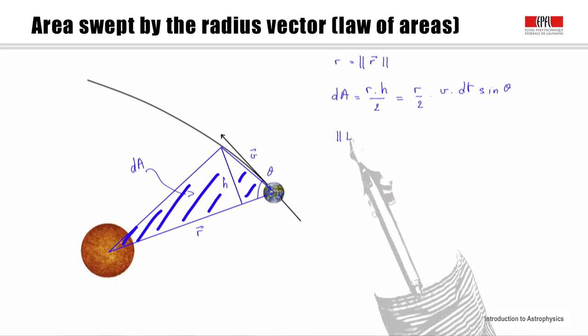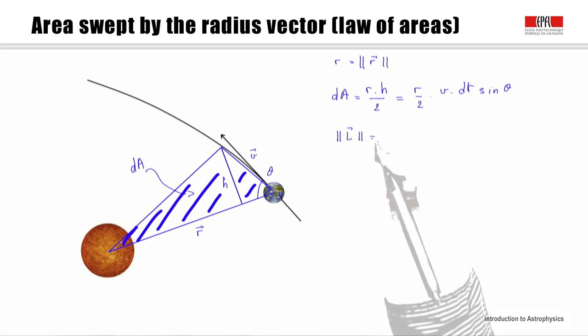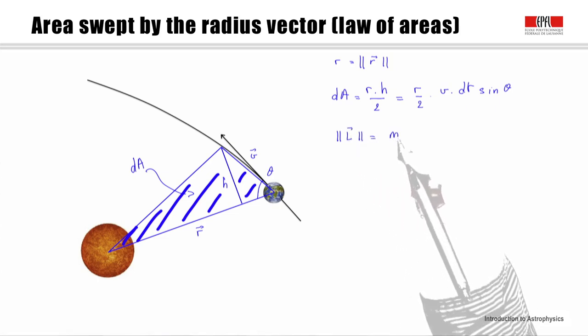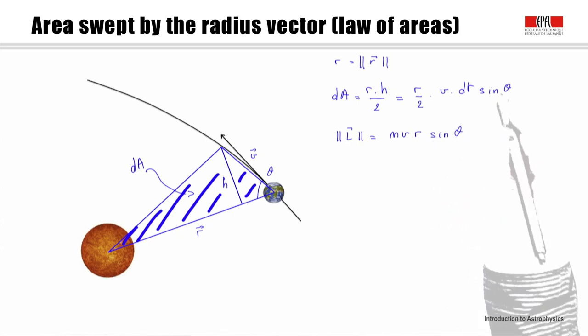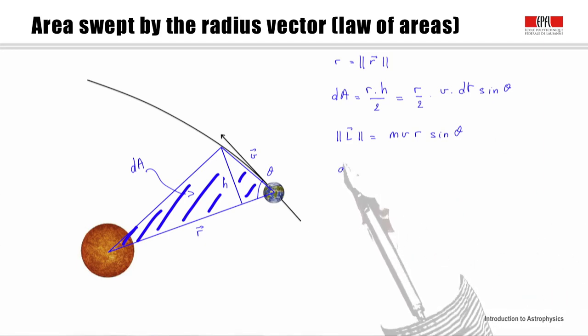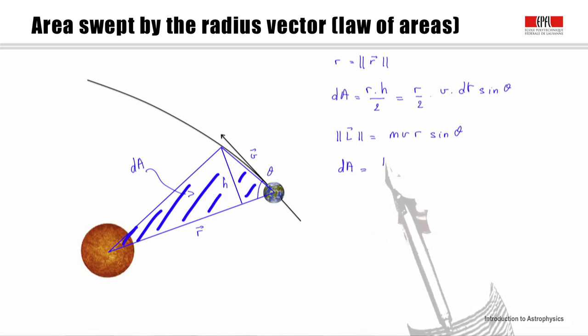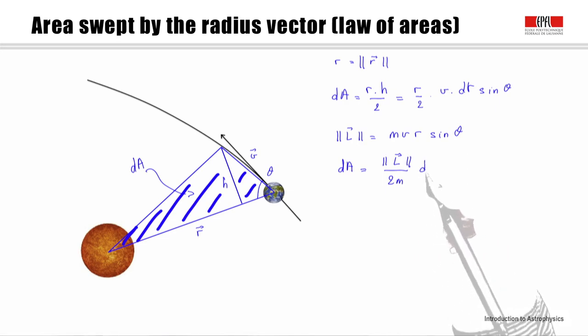We immediately see that the norm of the angular momentum, which is mvr sin theta, shows up here to a factor m. We can thus rewrite the surface element in this way. Here is the norm of the angular momentum, which we proved previously to be constant, over 2m times dt.